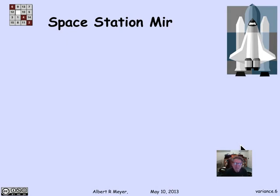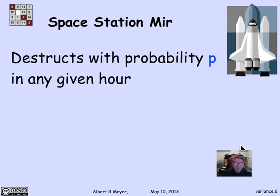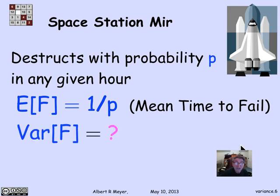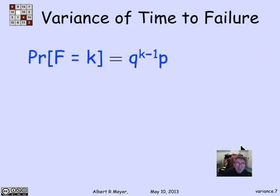Let's look at the space station Mir again, used as an example of calculating mean time to failure. The hypothesis is that with probability p, the Mir space station will run into some huge space garbage that will destroy it — and this happens in any given hour with probability p. We know the expected number of hours for Mir to fail is 1/p. What we're asking now is: what's the variance of F, the number of hours to failure?